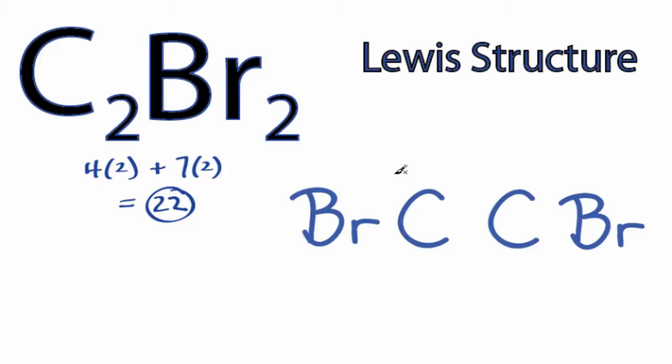There are 22 valence electrons in the Lewis structure for C2Br2. We'll put two between atoms to form chemical bonds. We've used six, then we'll go around the bromines, eight, ten, and eighteen.